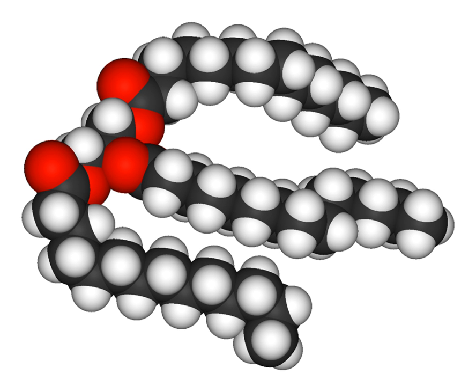Fats and oils are categorized according to the number and bonding of the carbon atoms in the aliphatic chain. Fats that are saturated fats have no double bonds between the carbons in the chain. Unsaturated fats have one or more double bonded carbons in the chain.